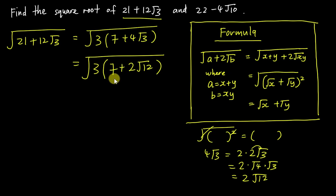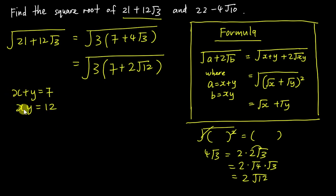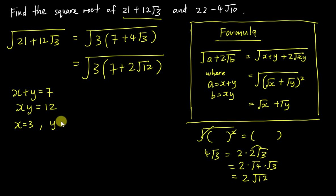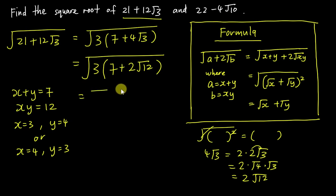Now a = 7, and since a = x + y, I write x + y = 7. And x × y = 12. So I need two numbers that multiply to 12 and add to 7 — obviously 3 × 4 = 12 and 3 + 4 = 7. Therefore x = 3, y = 4, or x = 4, y = 3 — it doesn't matter as long as both terms are used.